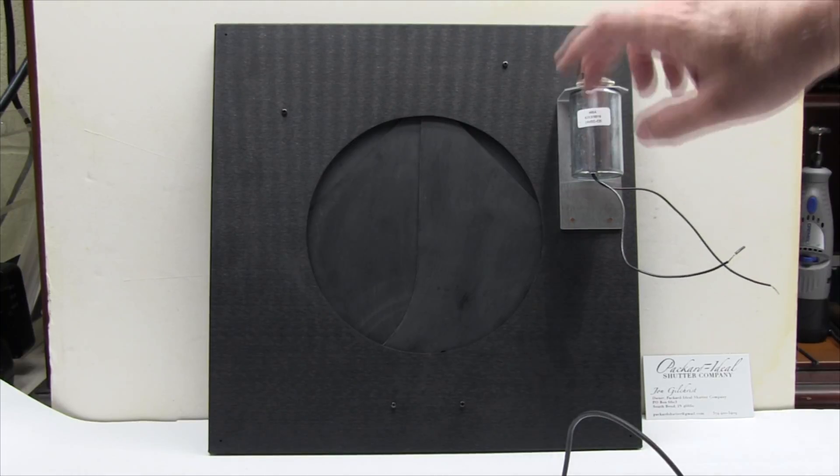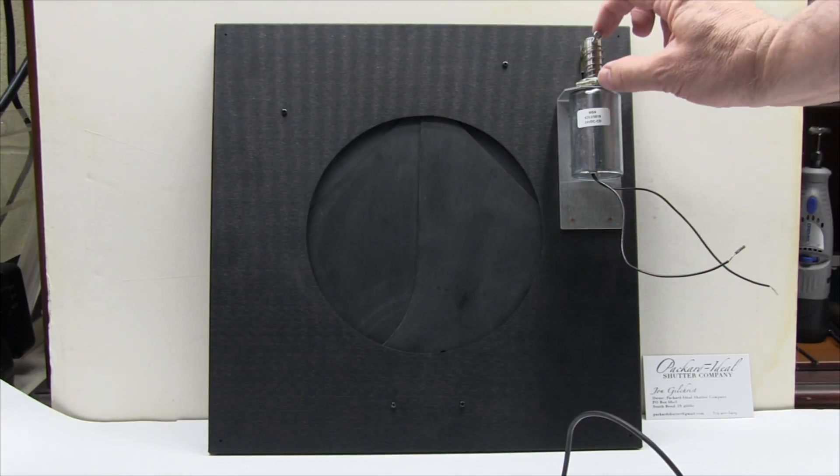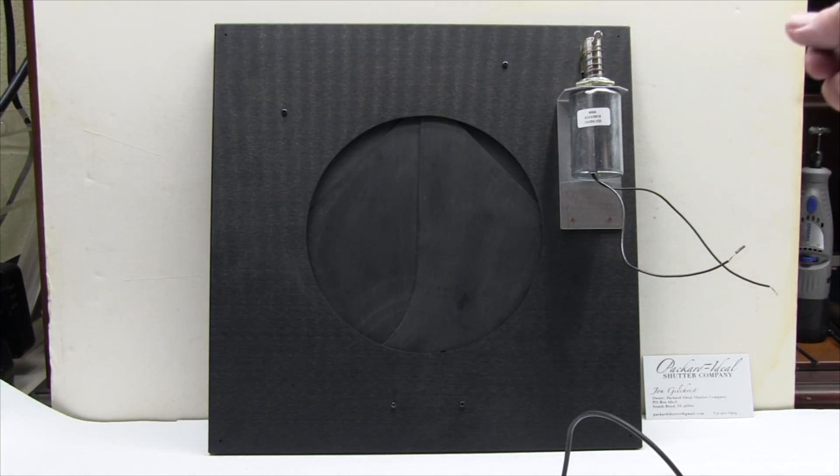I'm looking at different actuators because the solenoid actuators need a lot of force when they've got that long of a stroke. And something like a stepper motor or a linear actuator might be a better option. I'm looking into that. I haven't got any solutions yet, but we're working on it.